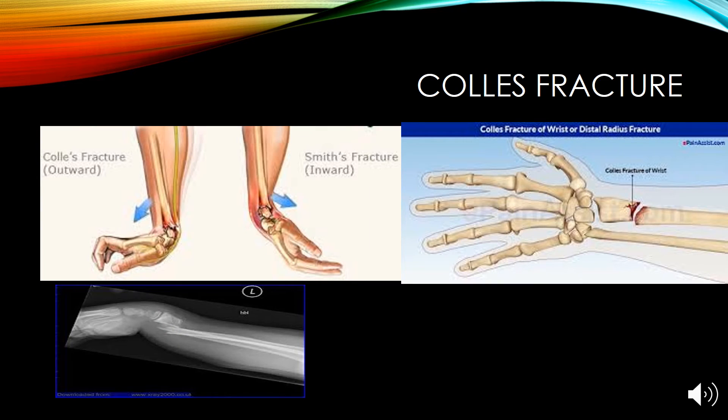The Colles fracture occurs at the lower end of the radius where the radius and wrist meet, and is characteristically seen with a backward displacement of the hand. This fracture often occurs when someone tries to catch themselves from falling with an outstretched hand. If the wrist is flexed inward, a Smith fracture can occur.